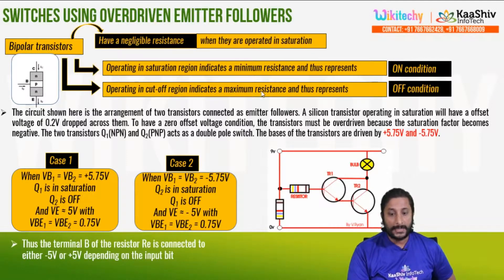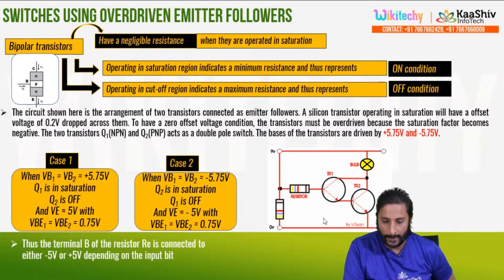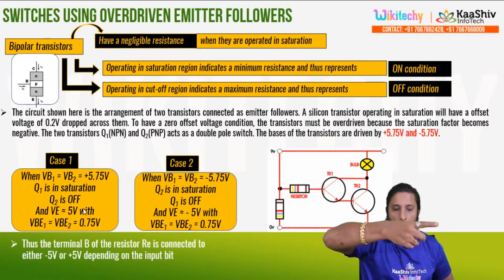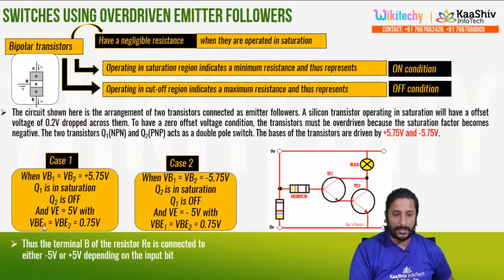It is a maximum resistance in the cutoff condition. When VB1 and VB2 equal 5.75 voltage, Q1 is in saturation. Q2 is off. Q1 is on, Q2 is off. V equals 5 voltage with VBE and VB2 equal to 0.75 voltage.